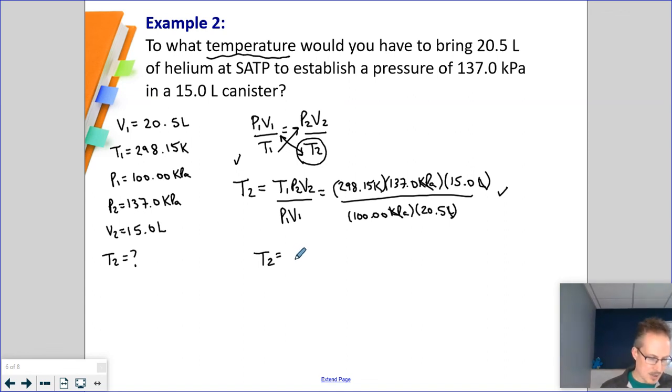And my answer on my calculator is 298.8771951 kelvins. I go back to the original question. Three sig figs, four sig figs, three sig figs. So my answer is going to be in three. My answer, that means this is going to round up, is going to be 299 kelvins.